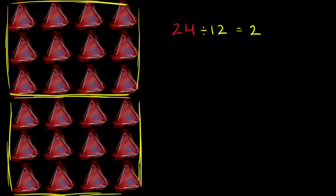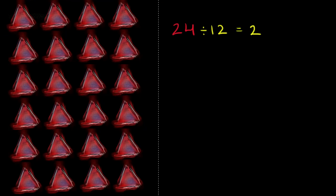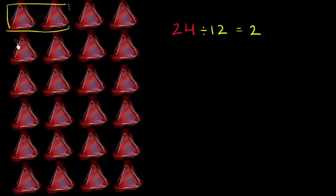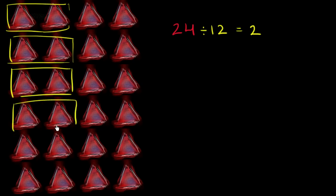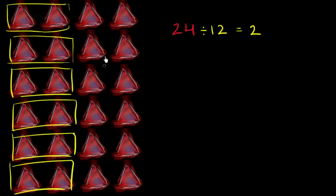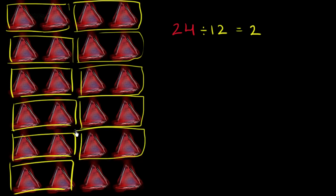But another just as reasonable way of doing this is you could say let me divide 24 into 12 groups instead of groups of 12. So if I want to divide into 12 equal groups — one, two, three, four, five, six, seven, eight, nine, ten, eleven, twelve. So once again, if you divide 24 into 12 equal groups, how many do you have in each group? You have two. So 24 can be viewed as 24 divided into 12 equal groups, or 24 divided into groups of 12, and that's what we saw in the last example.